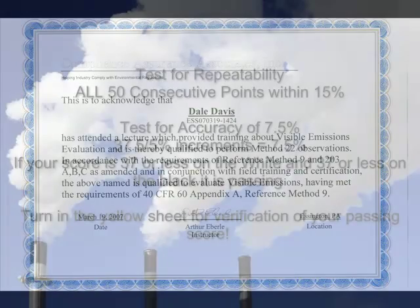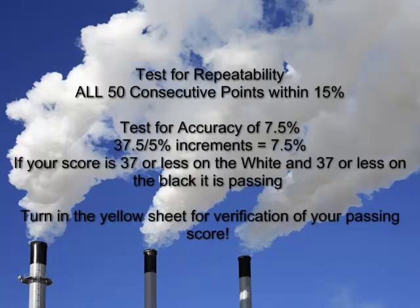The certification test is a statistically based test of your repeatability and accuracy. The repeatability requirements are measured by the evaluation of all 50 plumes within plus or minus 15%. The accuracy requirements are measured by your total score for each section — 37.5 columns divided by a 5% increment is equal to 7.5% accuracy, which is the requirement you must meet in order to certify. We evaluated plumes to the nearest 5%, and since this is the accuracy we can prove in court, your observations should be reported to the nearest 5%. Although a reading of 24 observations is likely to be something other than a 5% increment, your underlying observations should be reported to the nearest 5%.